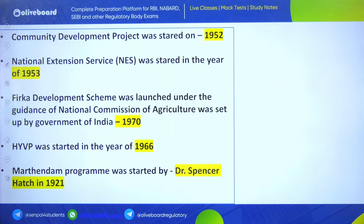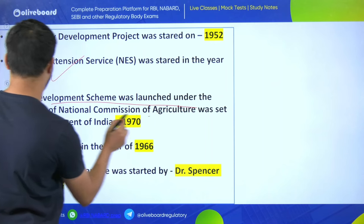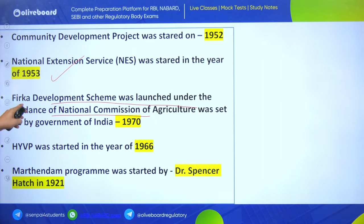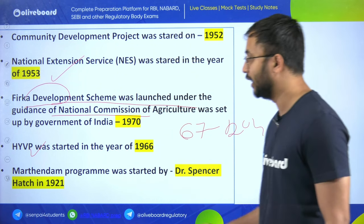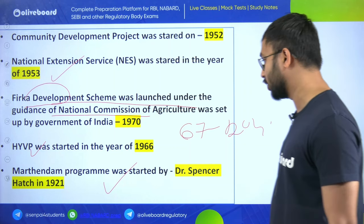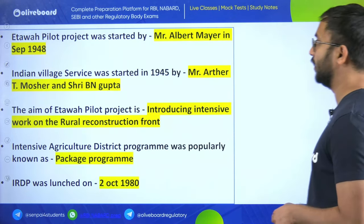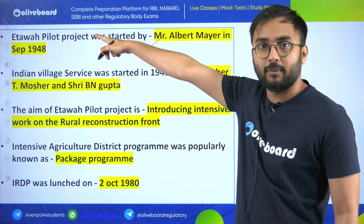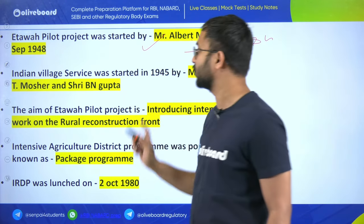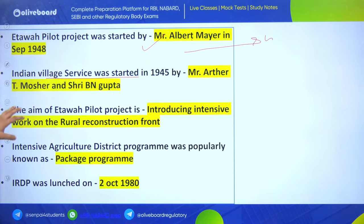Community Development Project was started in 1954 - very important. National Extension Service started in 1953. Firka Development Project was launched under the National Commission on Agriculture set up in 1970. High Yielding Variety Program was started in 1966 - linked to Green Revolution in 1967. Marthandom Program was started by Dr. Spencer Hatch in 1921 - related to extension education.